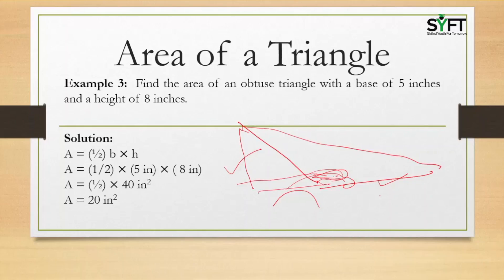Half base into height is the area. So the area is half into 5 into 8 inches — that is half into 40 inches squared — which equals 20 inches squared.